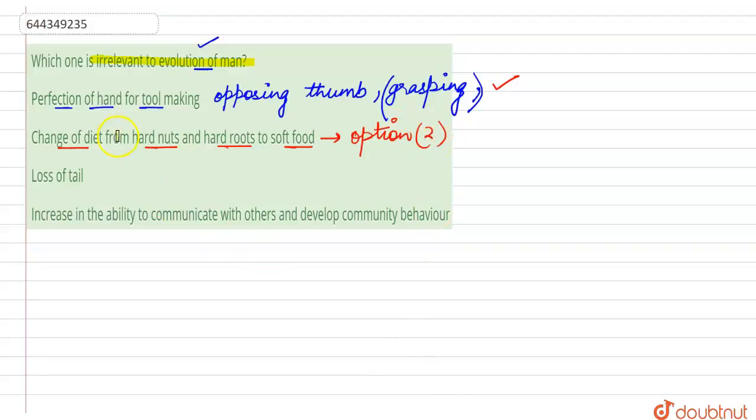Change of diet from hard nuts and hard roots to soft food was a social change and not an evolutionary change. Man became more sophisticated and started eating processed food. So this is what happened during the evolution of man. This becomes the right answer for this question.